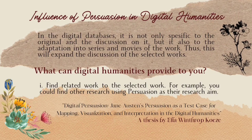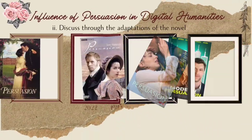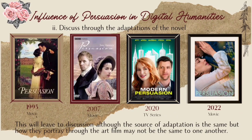Aside from that, it can also be discussed through the adaptations of the novel. Persuasion has been adapted into film several times, such as Persuasion 1995, Persuasion 2007, and Persuasion 2020. You could also note a similar adaptation portrayed in the modern era, such as Modern Persuasion 2020. This leads to discussion about how, although the source of adaptation is the same, the way they portray it through film may differ from one another.